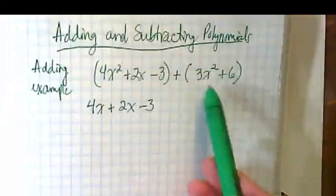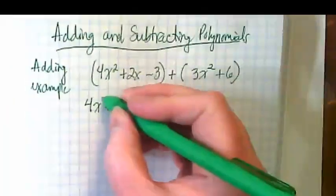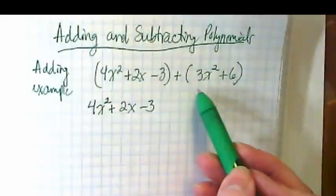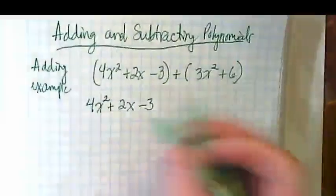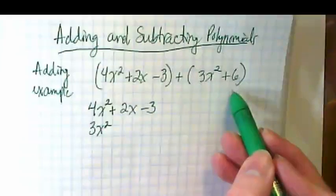Where am I going to put this 3x squared? I left off the squared. Where am I going to put this 3x²? Under the 4x². Where am I going to put the 6?